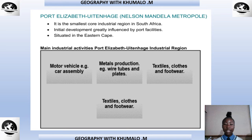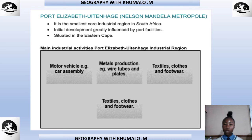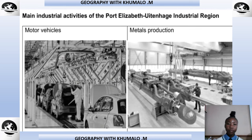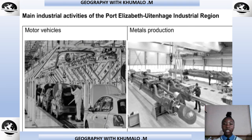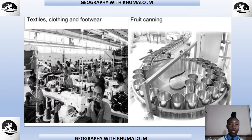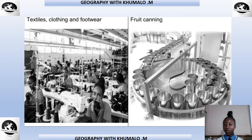Other main industrial activities of the Port Elizabeth Winterhaven region include textiles, clothes and footwear — involving the production of clothing — as well as food canning, which also takes place in the factories. Pictures show people working on cars, metal production, textiles and clothing, and food canning.